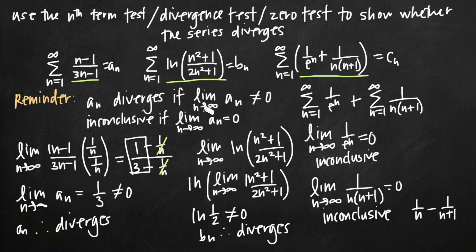So those are a few examples of how we use the divergence test to determine whether a series diverges, or to conclude that the test is inconclusive and a different test is needed instead.